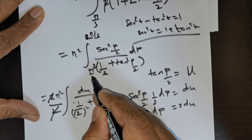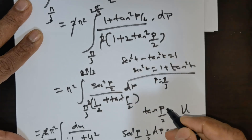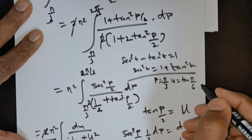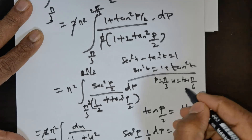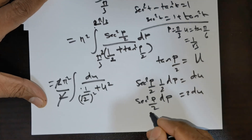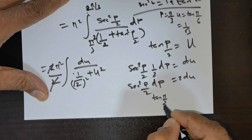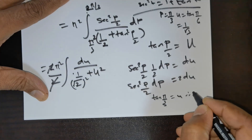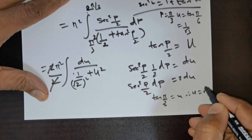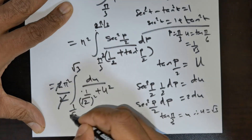Now computing the new limits in u. When p = π/3, u = tan(π/6) = tan 30° = 1/√3. When p = 2π/3, u = tan(π/3) = tan 60° = √3. So the limits are 1/√3 to √3.